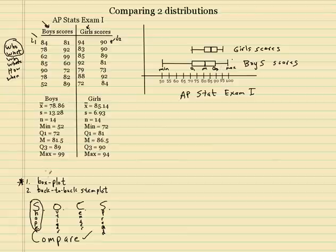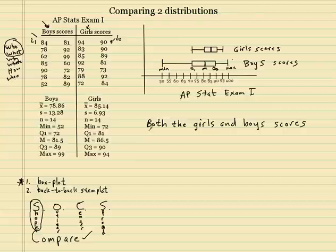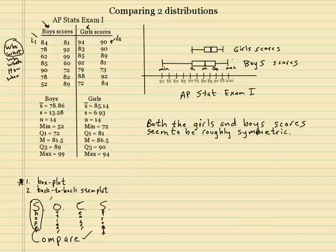So let's go ahead and start describing this. It looks like both of these graphs are pretty much symmetric — roughly symmetric. So you could say: both the girls' and boys' scores seem to be roughly symmetric. So I did my shape — that's pretty much it. Let's go to the next thing, which are outliers.